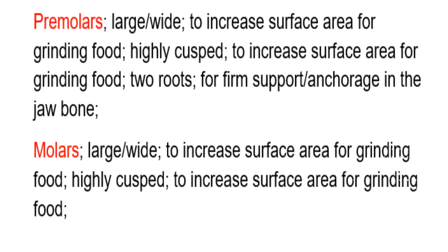The next type of teeth are called premolars. Premolars are wide to increase surface area for grinding food. They are highly cusped to increase surface area for grinding food. They have two roots for firm support in the jaw bone.